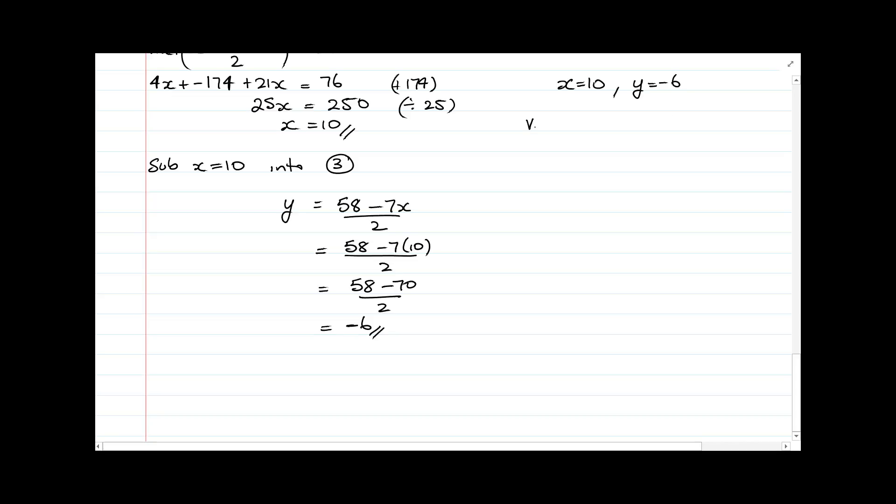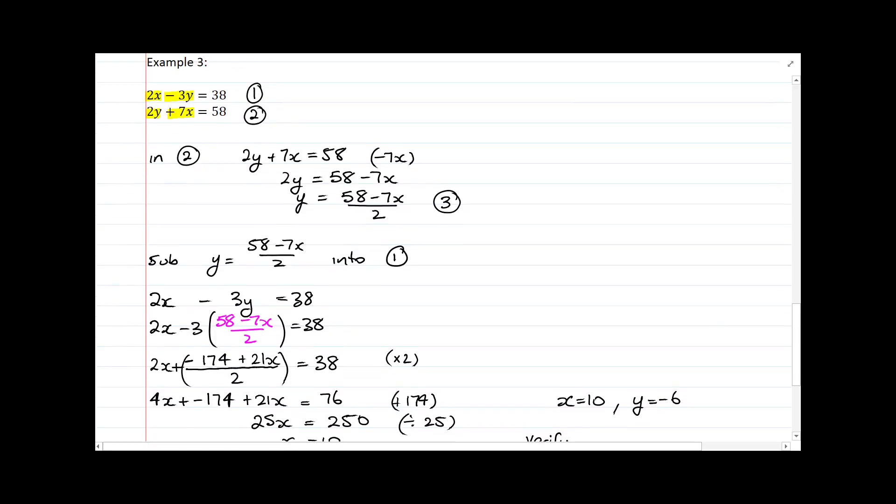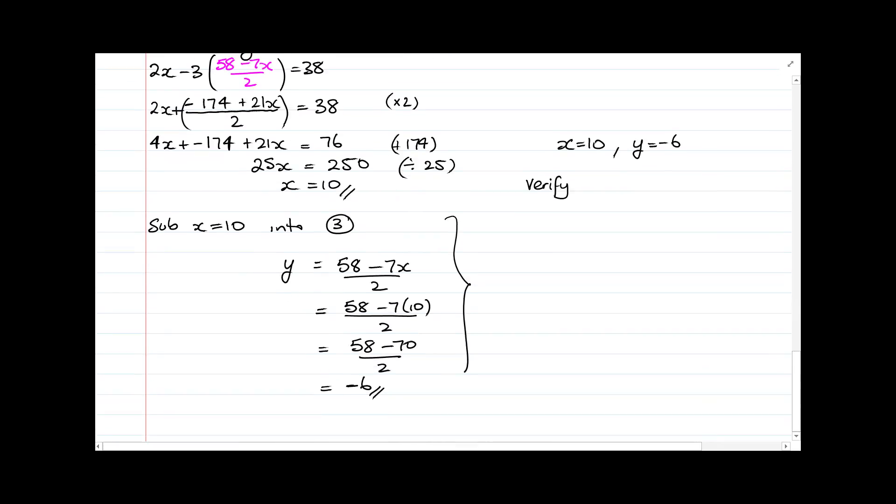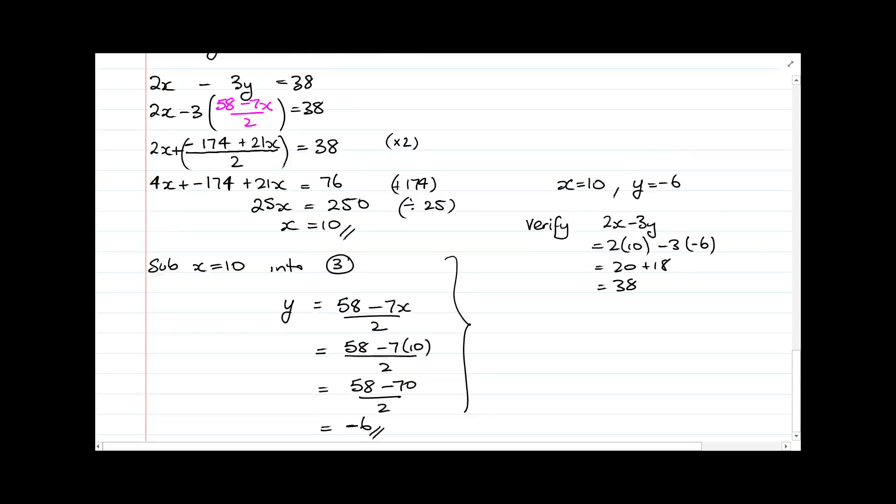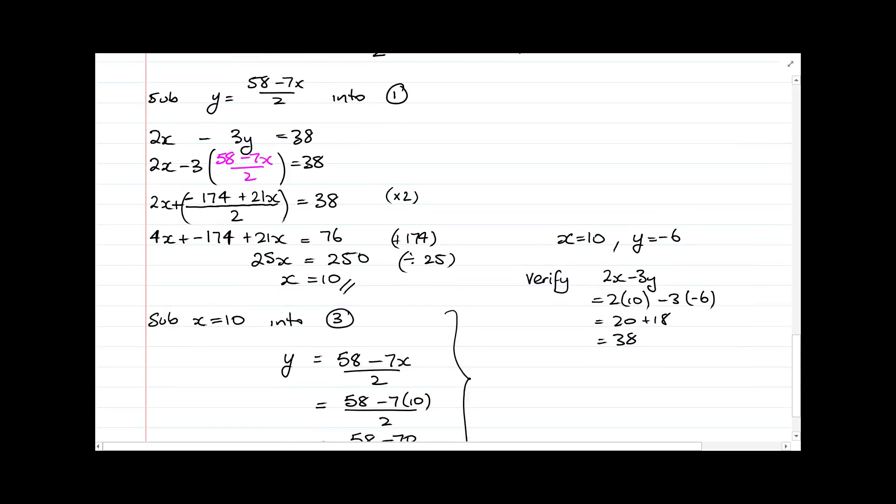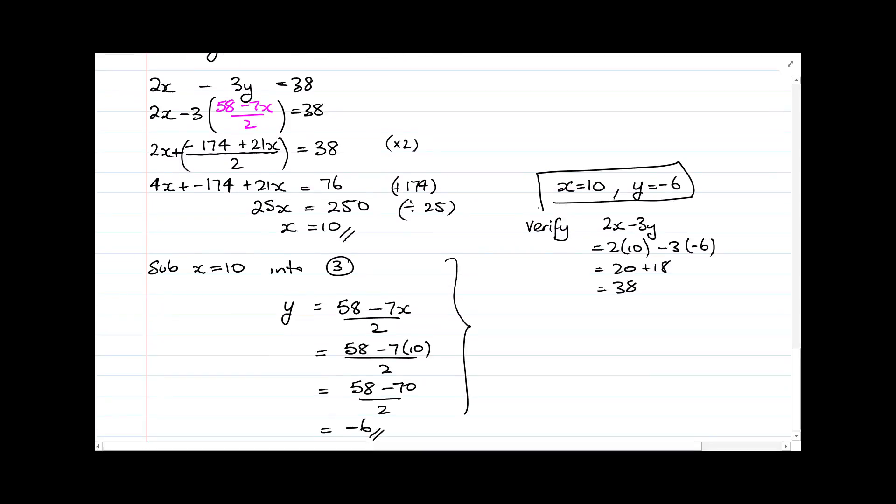And of course I should verify this now into the unused function. Now I used number 3, and number 3 was just a rearrangement of number 2. You might recall from up here. So I'm now going to use number 1 to verify. So I have 2x minus 3y equals 38. So 2x minus 3y which is equal to 2 times 10 minus 3 times negative 6, and that's equal to 20 plus 18 which equals 38, which is exactly what I was hoping because that's 38 there. And so my solution is verified.